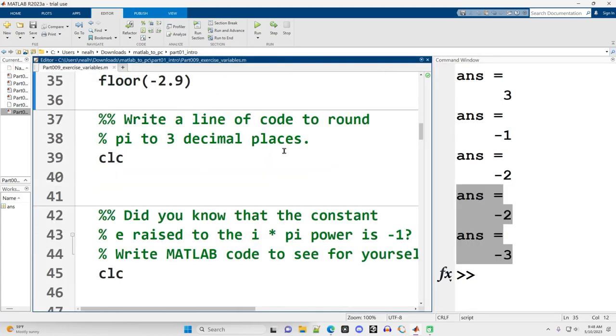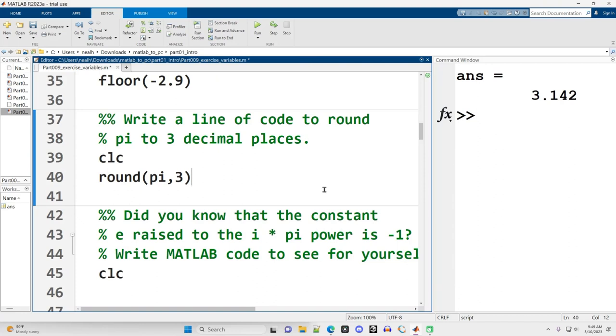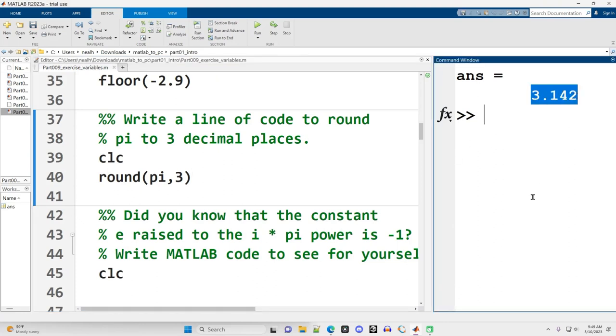Write a line of code to round pi to three decimal places. To round some number, let's call it x, to three decimal places, we would say round parentheses x comma three, except I want to round pi. Now pi, thankfully, is built in to MATLAB. So I can just type in pi right there and run it, and there is pi to three decimal places.